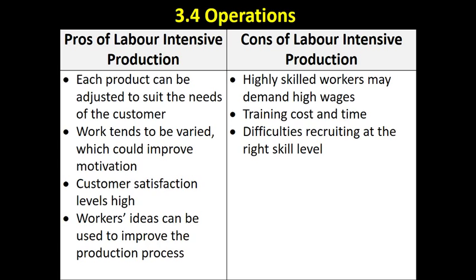If we use capital intensive production and replace workers with machinery, machines don't come up with ideas — this links back to the idea of Kaizen, getting the workforce to come up with ideas. On the other hand, highly skilled workers may demand high wages. There can be significant training costs and time taken to train workers up to the required skill level, and there are difficulties recruiting at the right skill level.